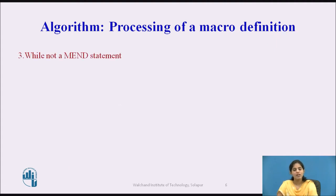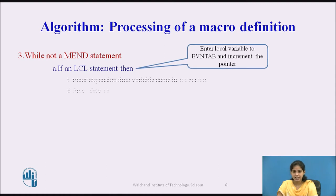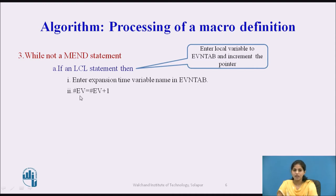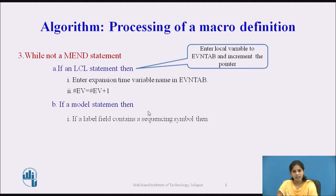The third step is a while loop: while not a MACRO END statement. First, we check if there is an LCL statement; if so, we enter that expansion time variable name in the EVN tab, which stands for Expansion time Variable Name table. After entering into the EVN tab, we increment hash EV by 1: hash EV = hash EV + 1.